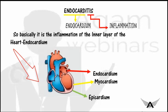Basically, what is endocarditis? When we split the word — endocardium and -itis — itis means inflammation and endocardium means the inner layer of the heart. So basically it is inflammation of the inner layer of the heart. In the picture you can see there are three layers of the heart: the epicardium (outermost layer), myocardium (muscular layer), and endocardium (innermost layer).